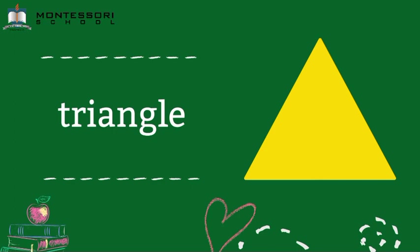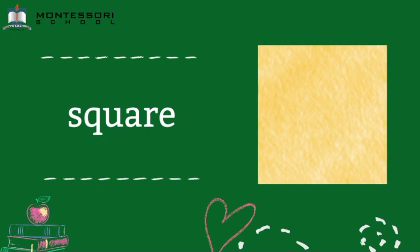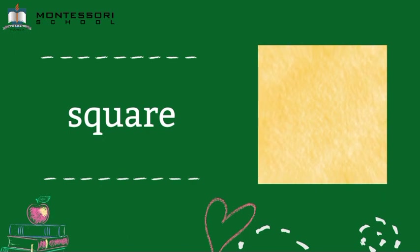Triangle! Yes, that is a triangle. The triangle has three sides. After triangle, we will see another shape. What shape is that? Do you know, friends? Yes, that is a square. So the square has four sides.